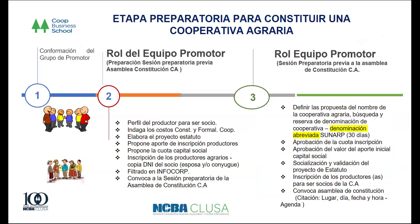Para formar una cooperativa agraria, primero tiene que haber una conformación de un grupo promotor, es decir, las personas que están interesadas en formar una cooperativa. Tienen que reunirse, definir qué tipo de cooperativa van a hacer, cuáles van a ser los requisitos y sobre todo qué es lo que persiguen. Una vez que se forma ese grupo promotor, ya se reúnen y tienen que definir algunos temas: el perfil del productor, en este caso el de los socios, los costos para formalizarla —tanto notarial como los registrales— y elaborar un proyecto de estatuto, que es lo más importante, bajo el cual se va a regir la cooperativa. Tienen que tomar un proyecto que vaya acorde con las necesidades de la cooperativa.